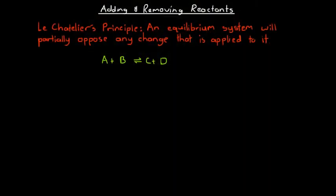What happens when we have an equilibrium system and we want to either add or remove substances to or from this system? How can we analyze and explain what happens? There is a really important principle that explains this situation quite effectively. We call this Le Chatelier's Principle, which states that if we have a chemical system at equilibrium, then if we change the system in any way, that system will oppose the change that we make.